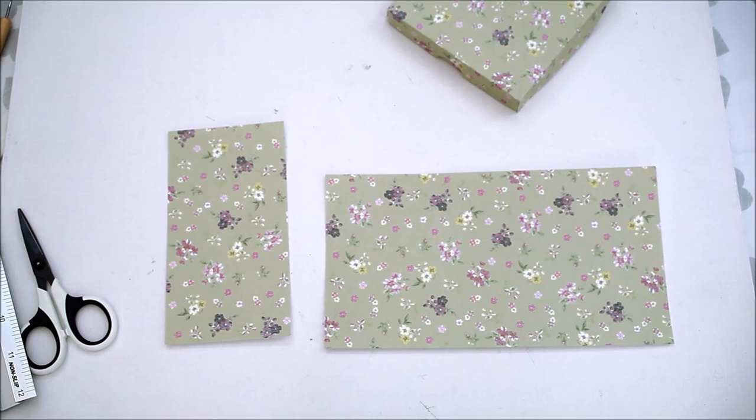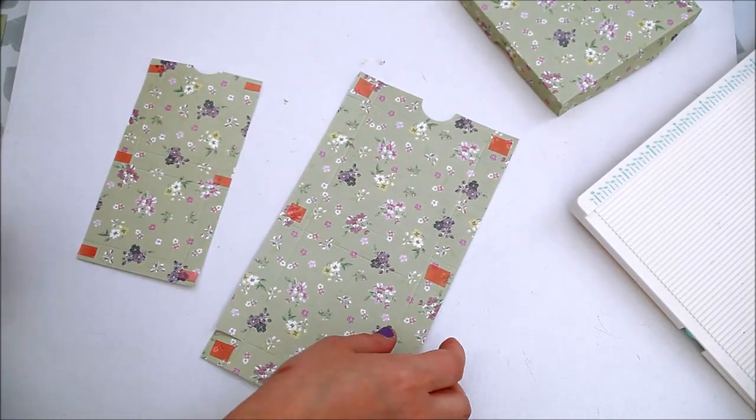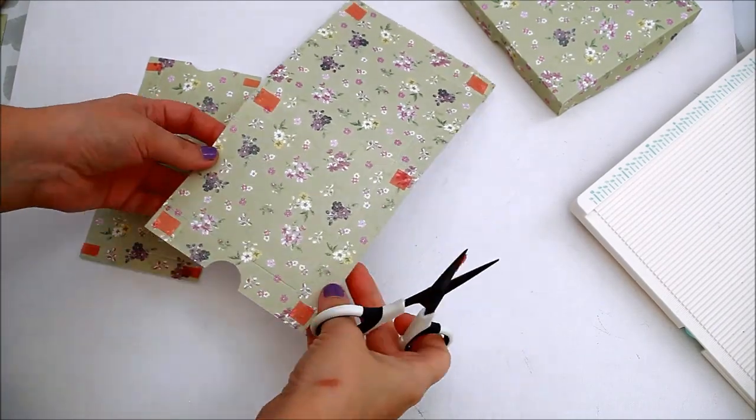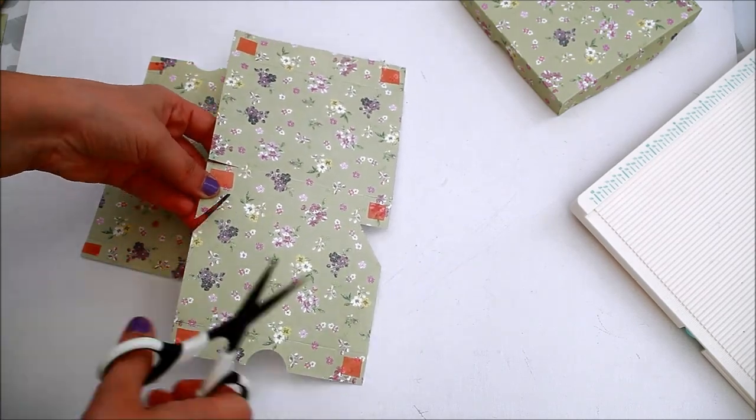Now I'm going to assemble the other two boxes I cut from the same paper. As for the other box, I added double sided tape on all the small flaps.